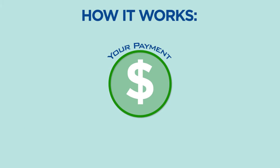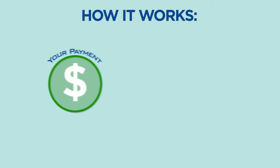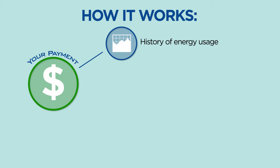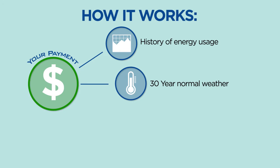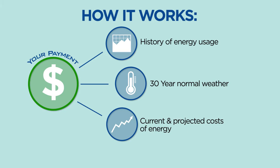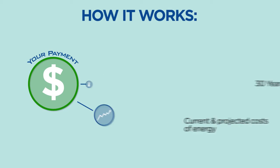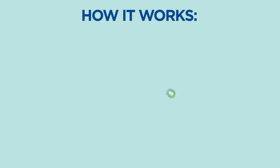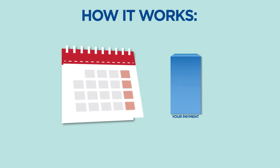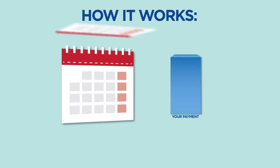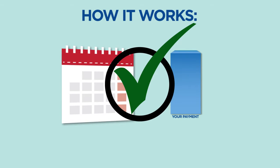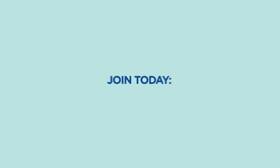Here's how it works. Your budget amount is based on the history of energy usage at your address. That is combined with the 30-year normal weather and the current and projected costs of energy. Then, your account is periodically reviewed to keep you on track with your actual account balance.